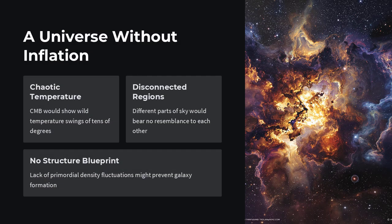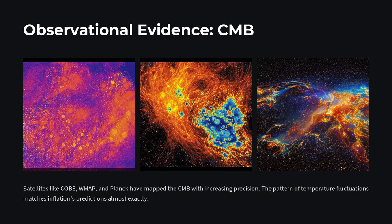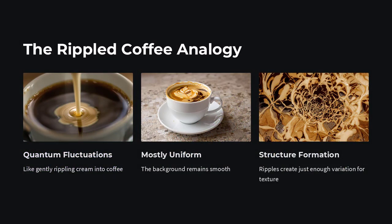In the early universe, light could only travel about a couple of hundred thousand light years before the cosmos became transparent. Yet today, those same regions lie more than 90 billion light years apart. They simply didn't have time to chat and equalize their temperatures before decoupling.